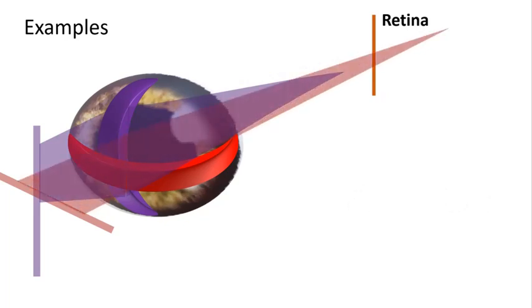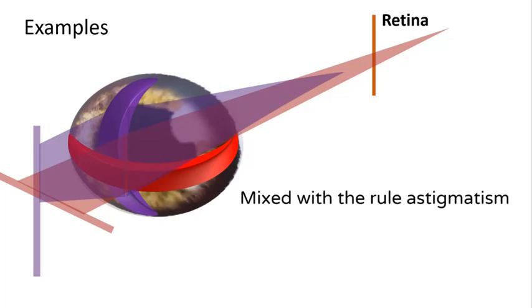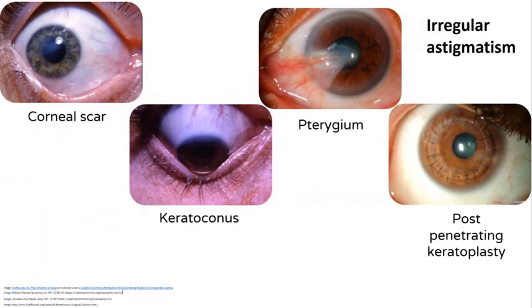Here: no meridian focuses on the retina, so it is either compound or mixed. Step two, both focus on opposite sides, therefore it is mixed. Step three, the vertical meridian is more myopic, so this is mixed with-the-rule astigmatism.